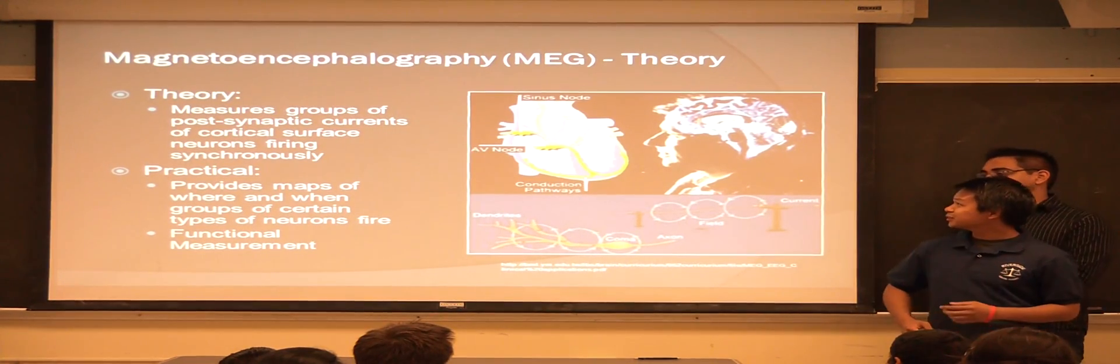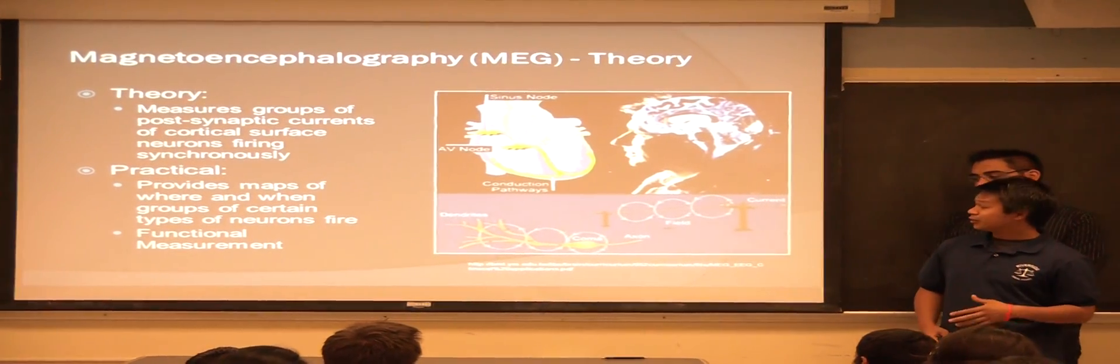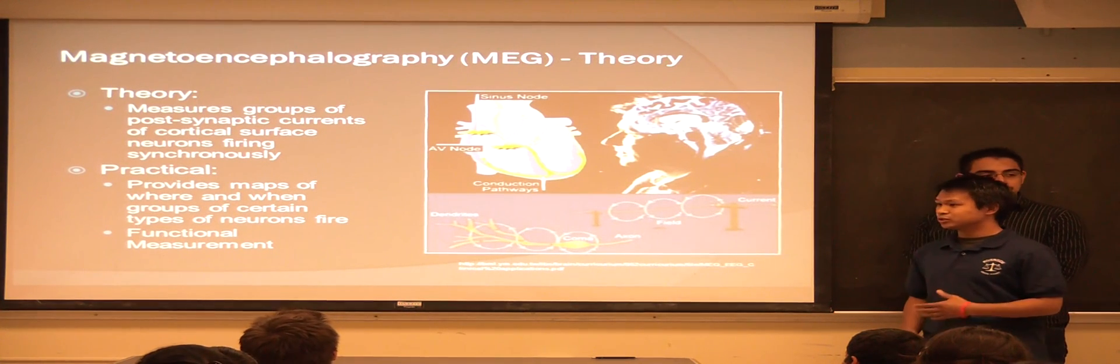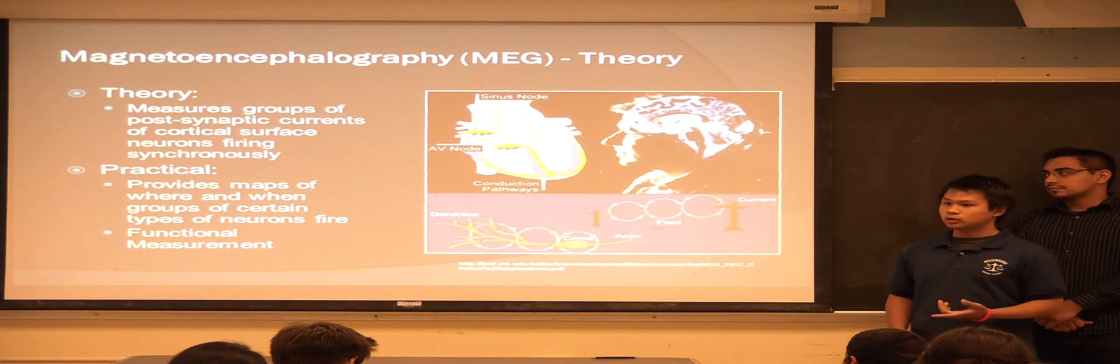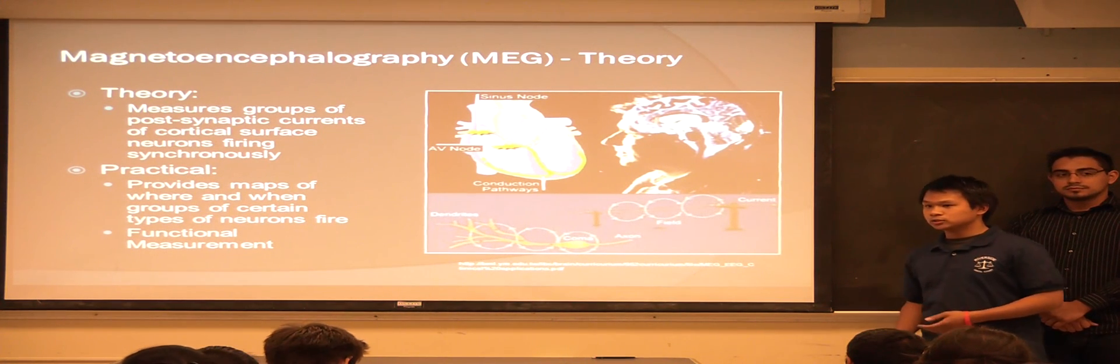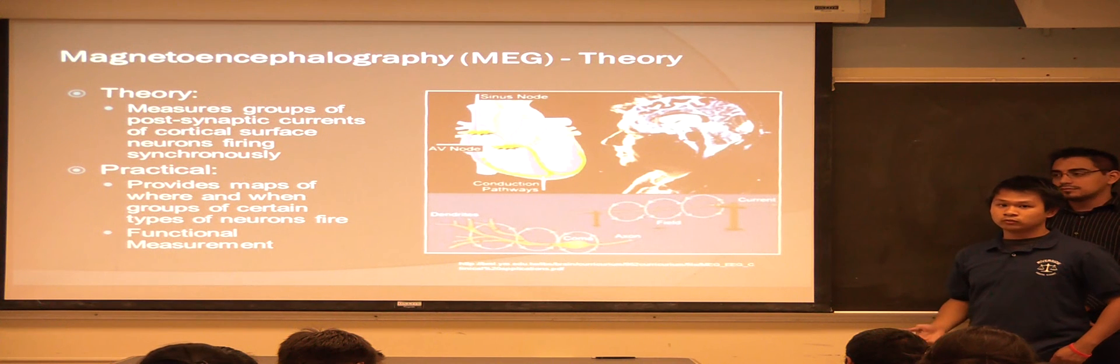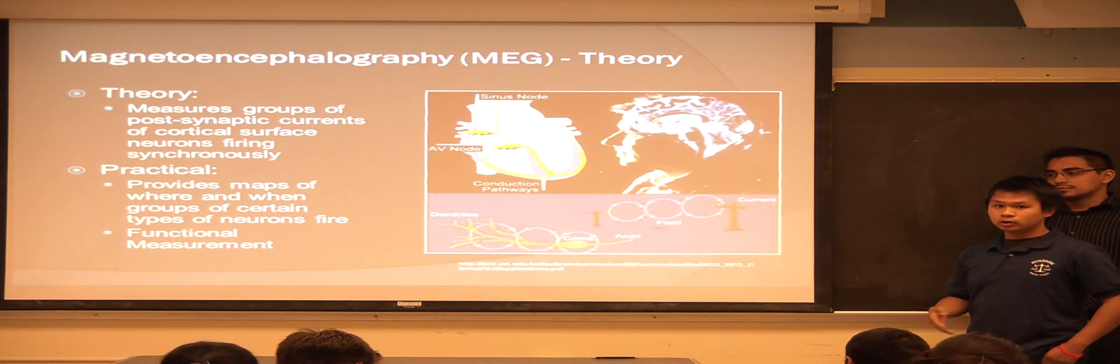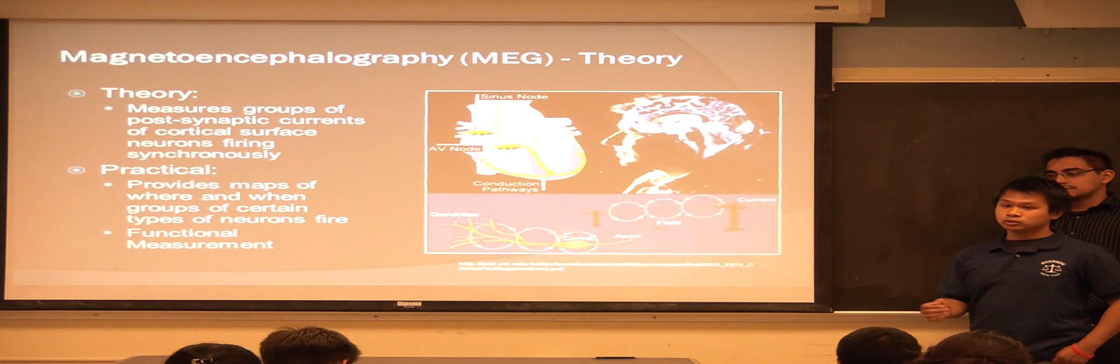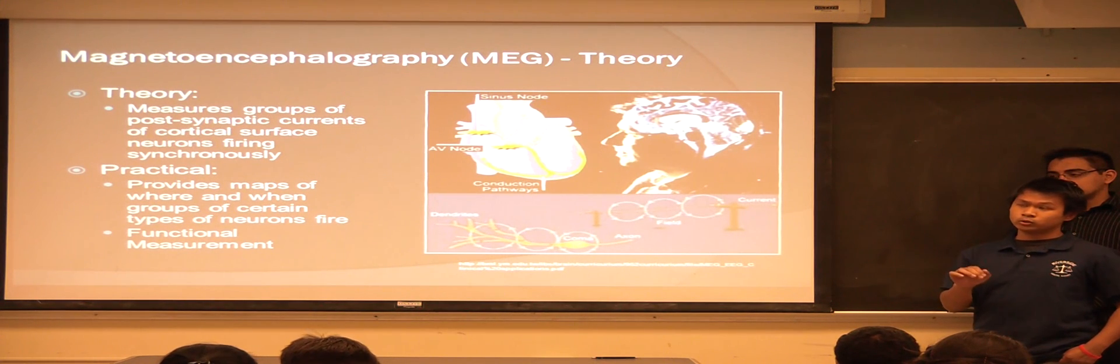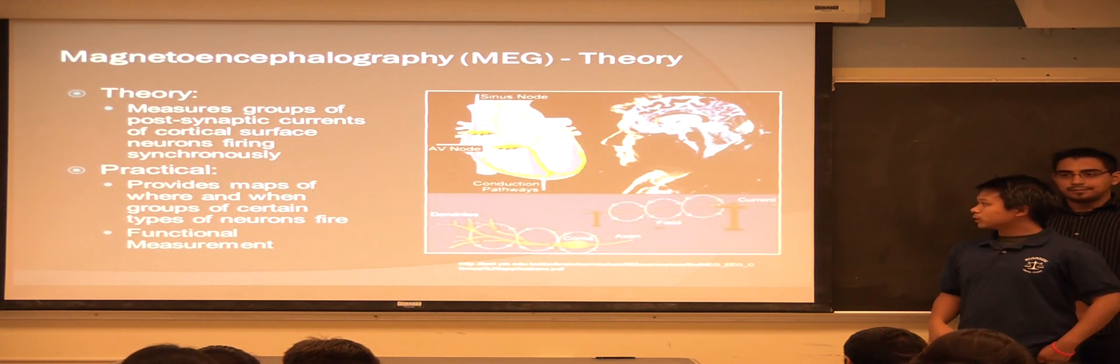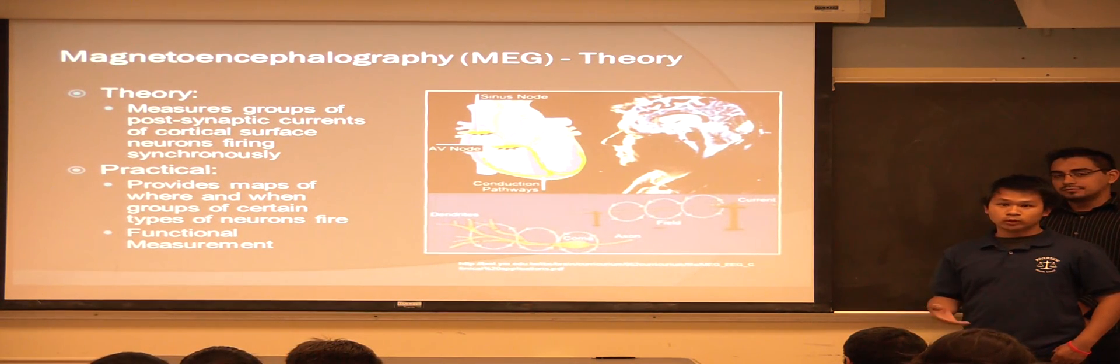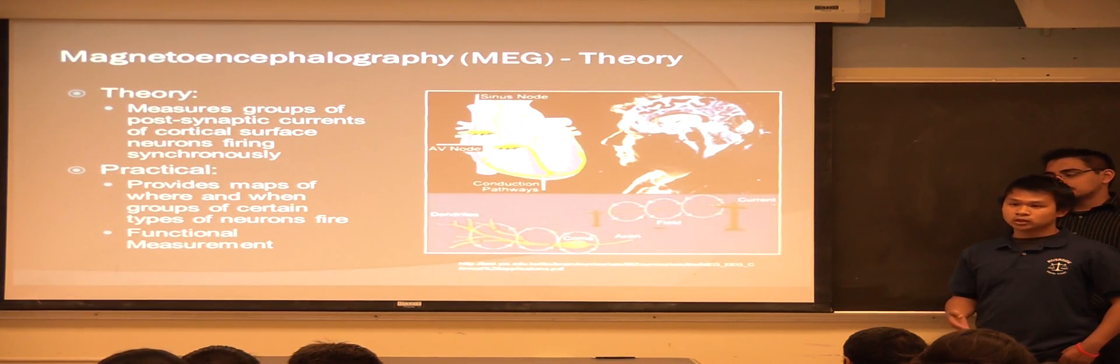So, I'll talk about the magnetoencephalography, or MEG for short. In theory, it measures the groups of pulsing synaptic currents, cortical surface neurons firing synaptically. Basically, it just measures magnetic waves coming from neurons, intracellular currents that are going through intracellular pathways. Practically, it just provides a map of where these magnetic waves come from.